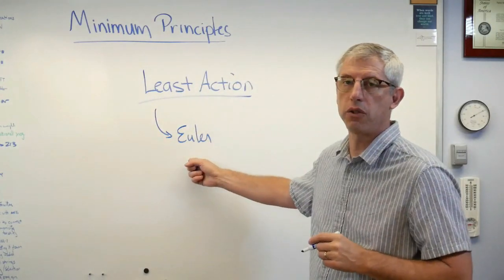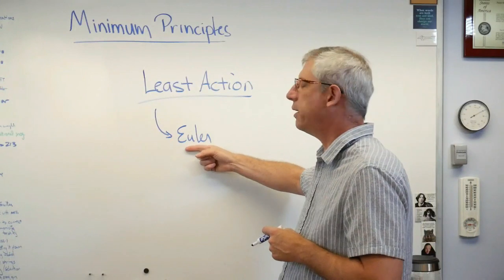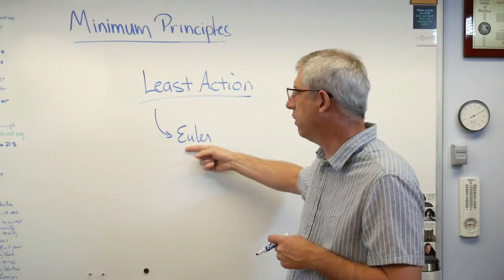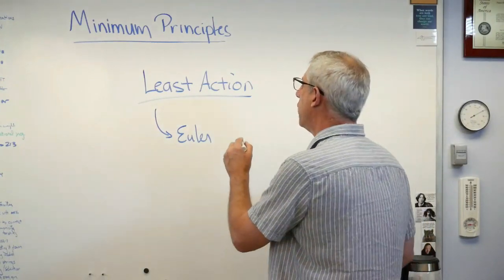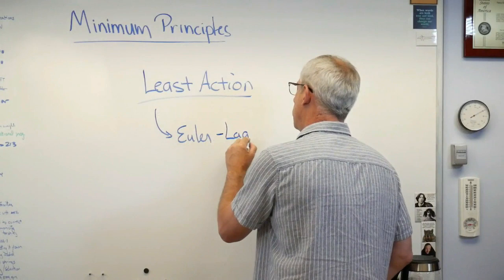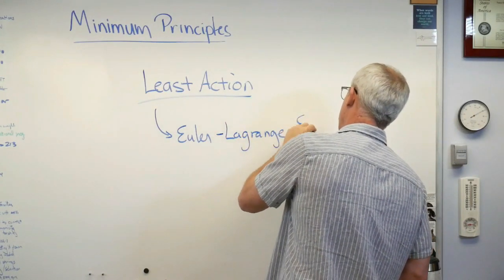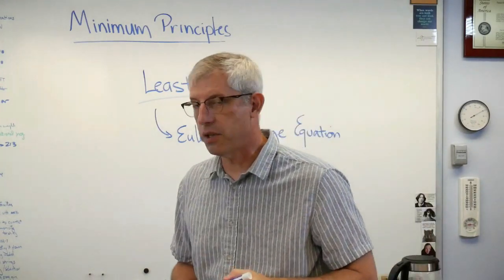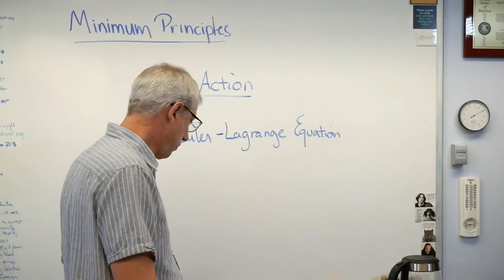Now this is Leonhard Euler, the German mathematician. I know it looks like Euler, and if you try to pronounce this as somebody would in English it looks like Euler, but he was German. EU sounds like oi, so this is Euler, and this is Euler-Lagrange, French mathematician. So the Euler-Lagrange equation, if you ever see that, that's nature minimizing something.